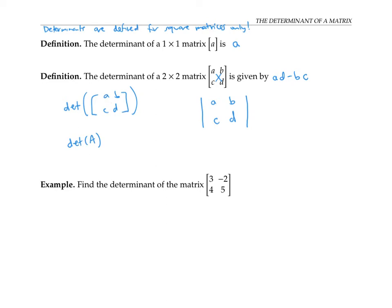So now let's work an example. We're going to find the determinant of the matrix with entries three, negative two, four, five. So that means three times five minus four times negative two, which is 15 minus negative eight, or 23.